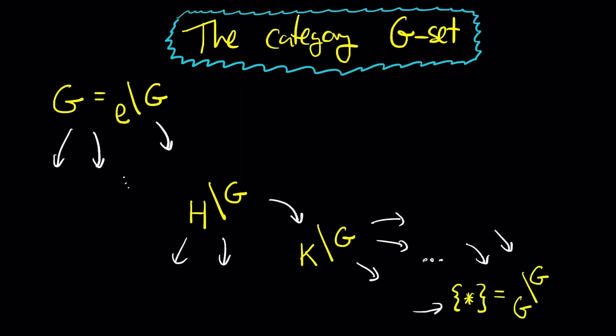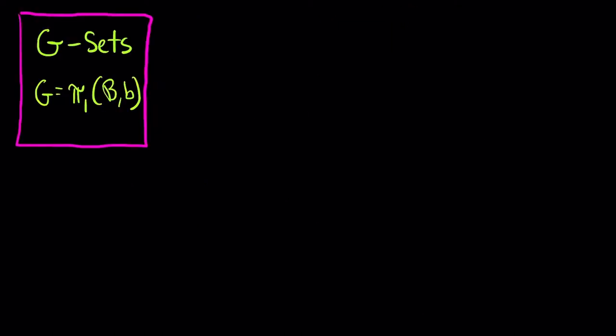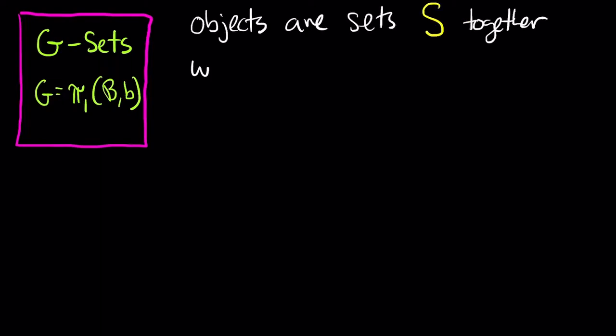My motivation for talking about the category of G-sets is topological, because the category of covering spaces of a topological space B is isomorphic to the category of G-sets, where G is the fundamental group of the base space. So you can understand everything about covering spaces in topology by understanding the category of G-sets for a fixed group G.